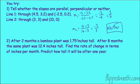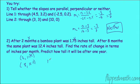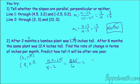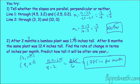After two months a bamboo plant was 1.75 inches tall; after eight months it was 12.4 inches tall. Find the rate of change in inches per month. Points are (2, 1.75) and (8, 12.4). So: 12.4 minus 1.75 over 8 minus 2 equals 10.65 over 6, which is approximately 1.775 inches per month.